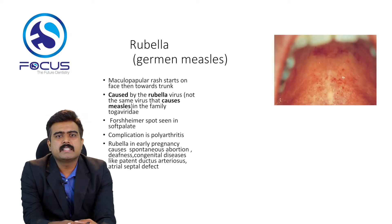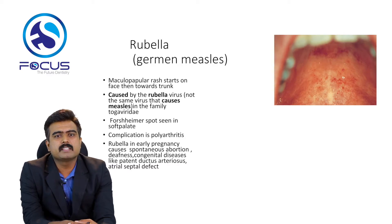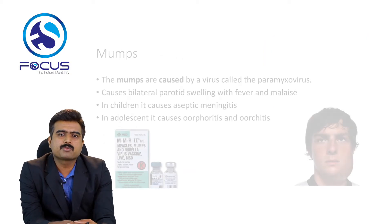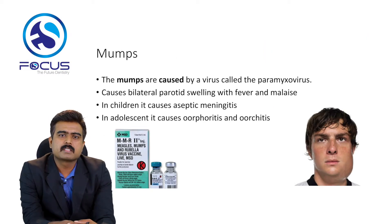The next one is German measles, that is rubella. The maculopapular rash starts on the face then spreads towards the trunk. It is caused by the rubella virus, and Forchheimer spots are seen on the soft palate. Rubella in early pregnancy causes abortion, deafness, congenital diseases such as patent ductus arteriosus and atrial septal defect.